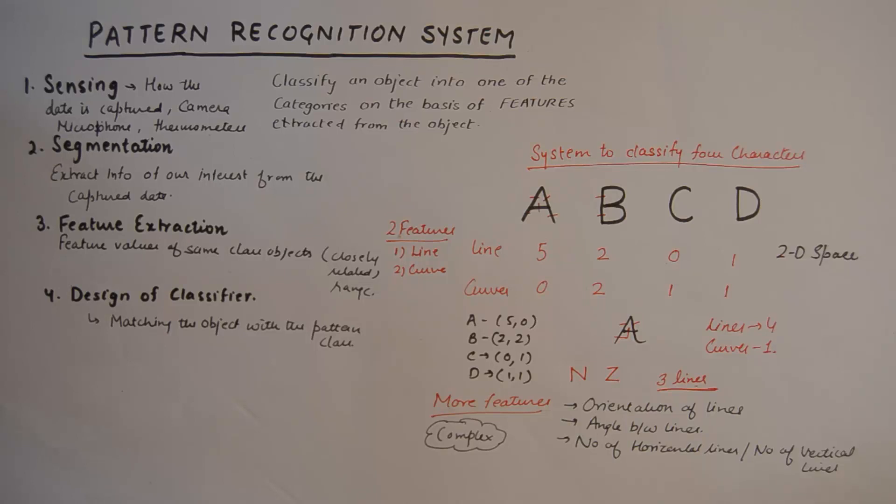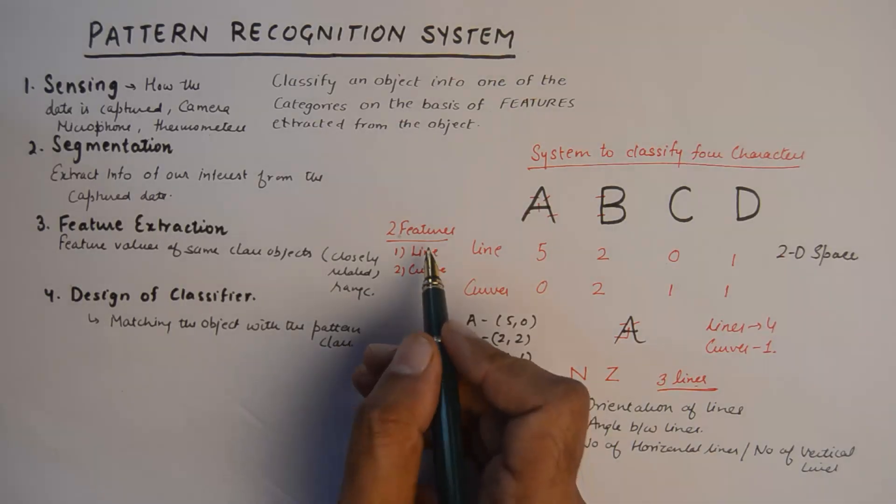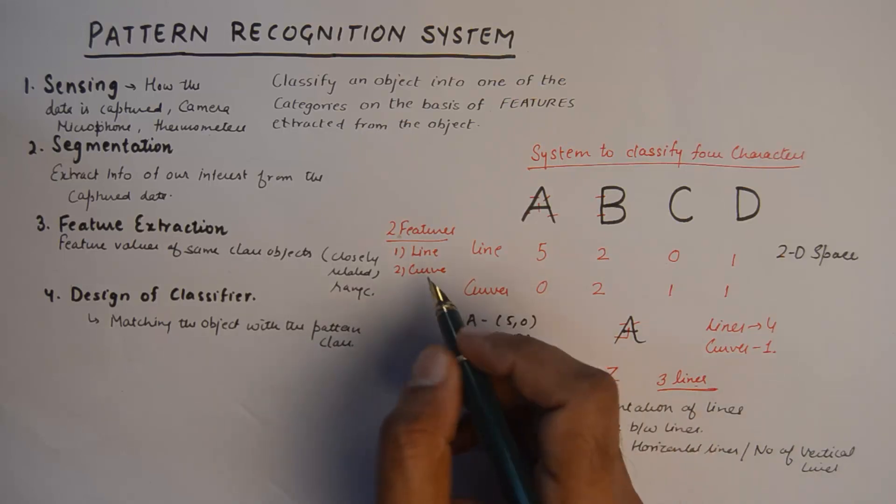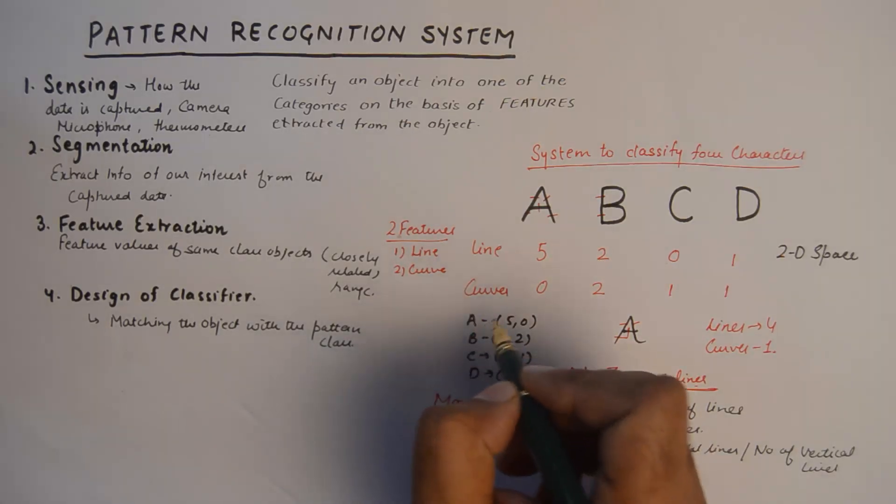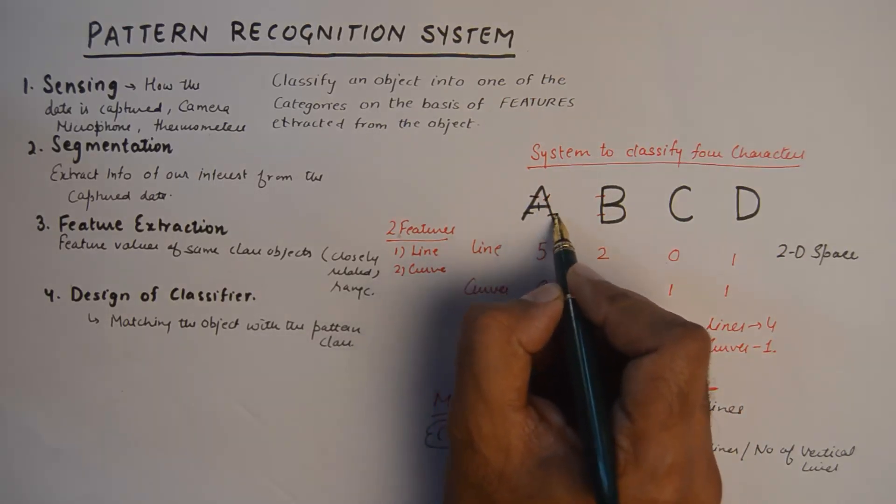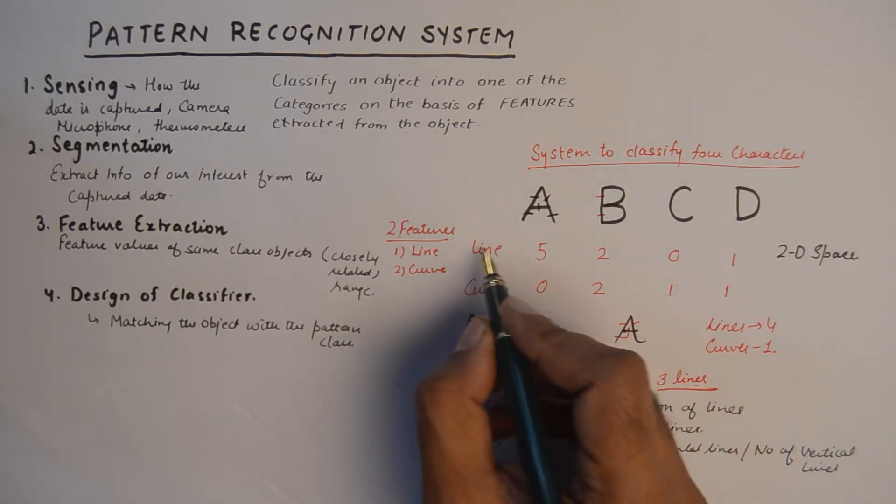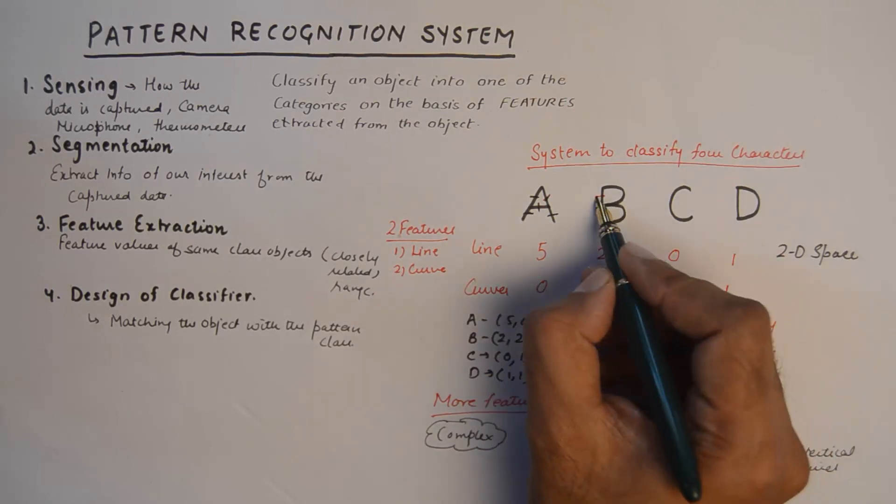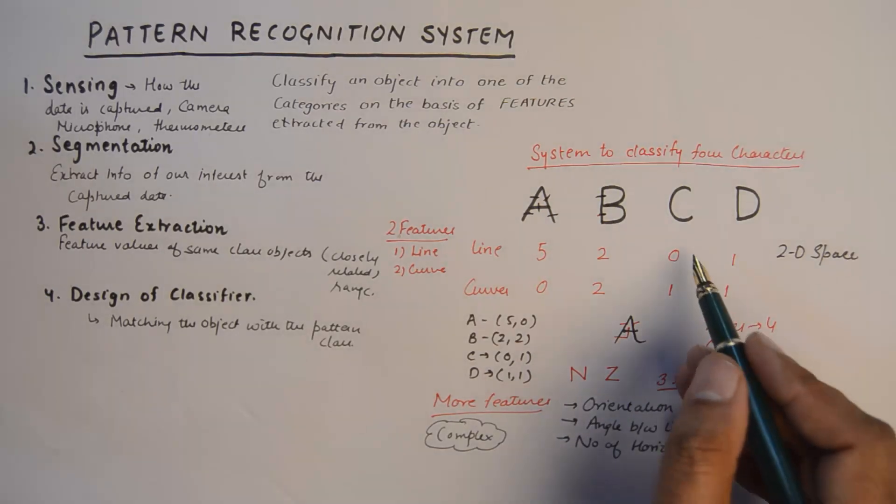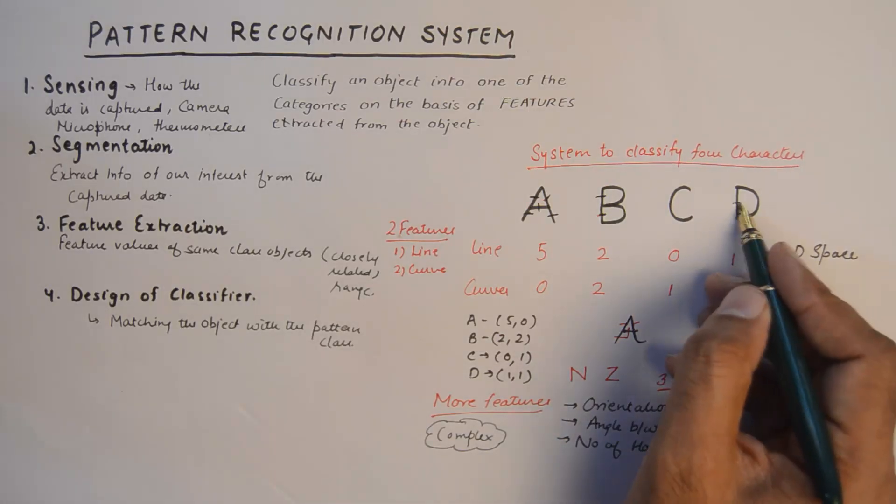The first thing that we need to classify characters is to define features in a system and then match those features to identify those characters. For example, I've taken up two features: line and curve, because we know that characters are made up of lines and curves. I'll only inspect these two features to recognize the character. If we talk about A, A has one, two, three, four, and five lines and zero curves, so I filled that up here in this small table. B has two lines and two curves. C has zero lines and one curve, and D has one line and a curve.